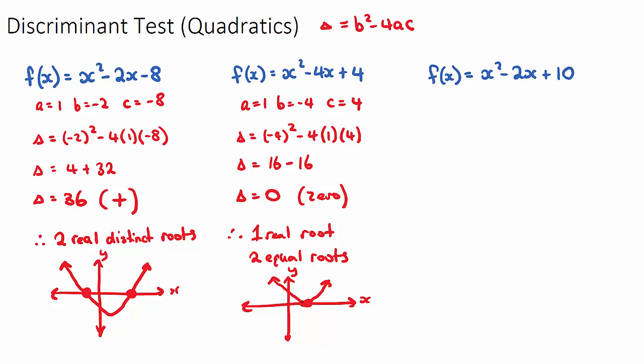You may see this, this might confuse you, but actually this equation here is a perfect square. This can be factorized to x minus 2 squared. And if you have a perfect square, they always have one real root.